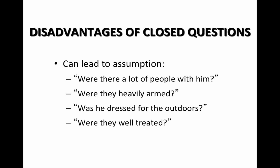Closed questions can lead to assumptions, so you've got to ask follow-up questions for clarity. 'Were there lots of people with them?' 'Yes.' You've got to follow up: 'How many?' 'Fifty.' 'How many males? How many females?' 'Twenty males, thirty females.' You've got to drill down from the closed question. If he says no: 'Was there anyone with him?' 'Yeah, there was one person, just one.' So you've got to ask those follow-up questions for clarity.